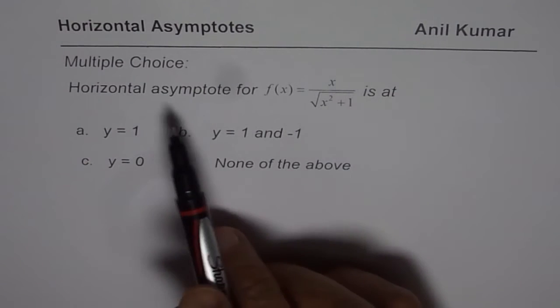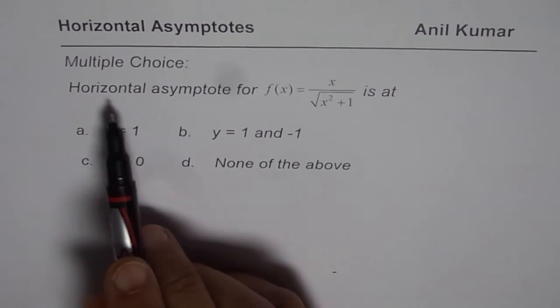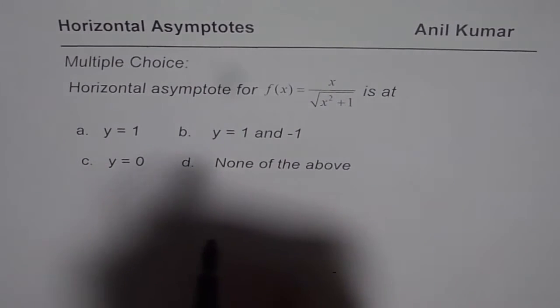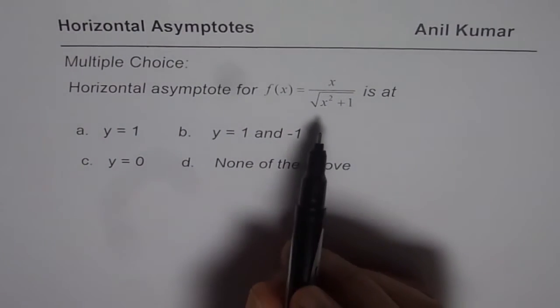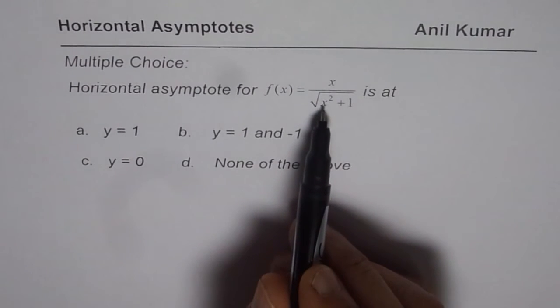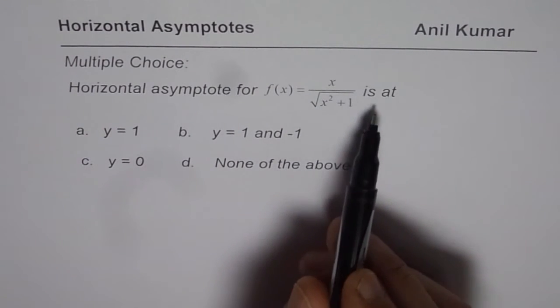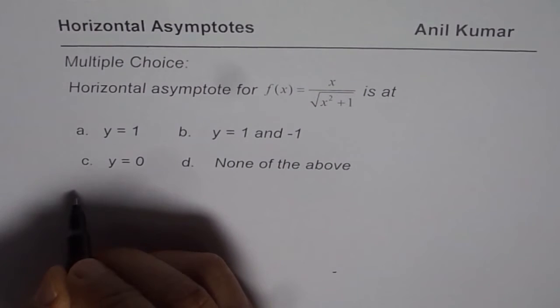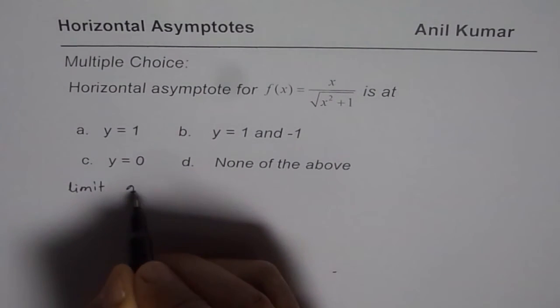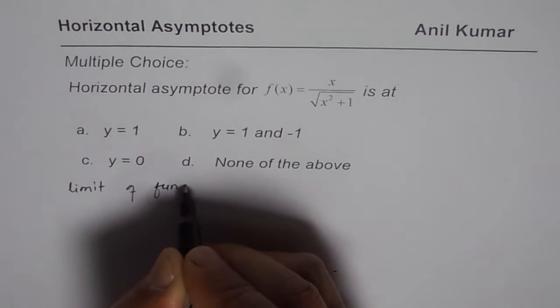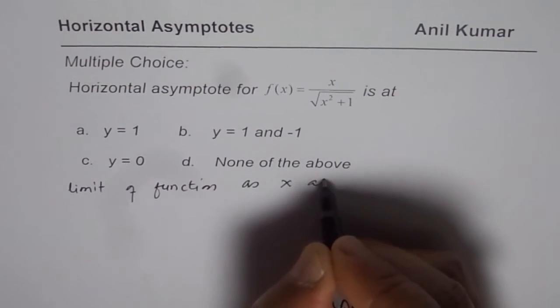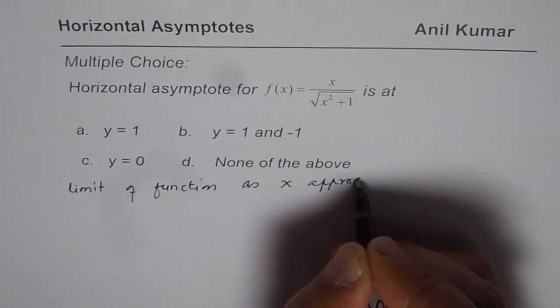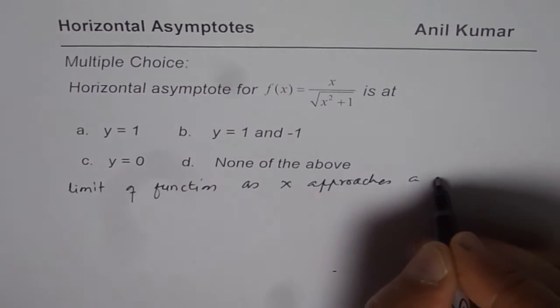Now how to find horizontal asymptote? Horizontal asymptote is value of the function approaching when the variable x, the independent variable approaches a large number. So mathematically we say limit of function as x approaches a large value.